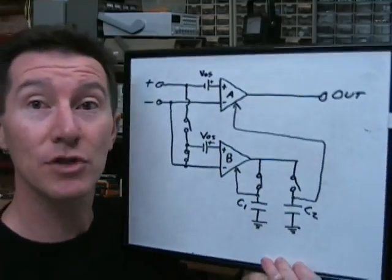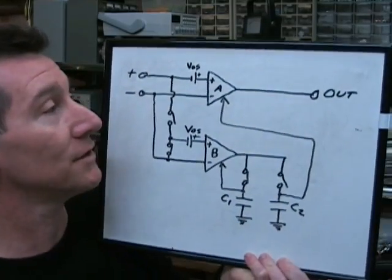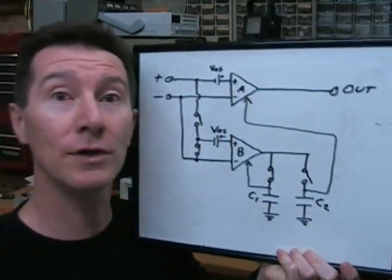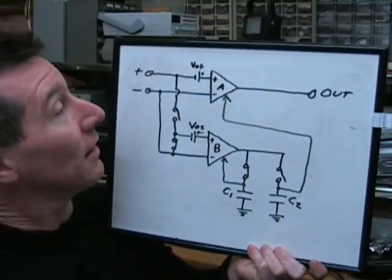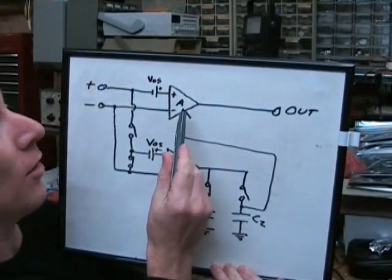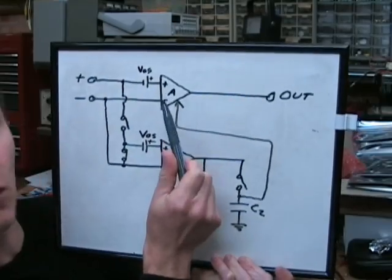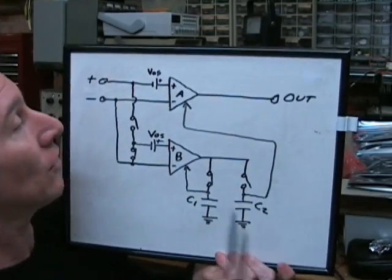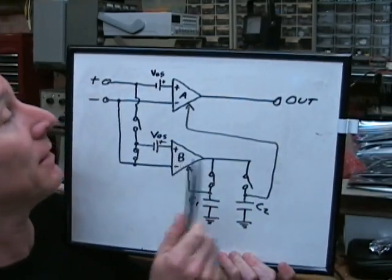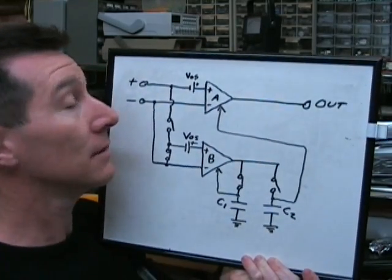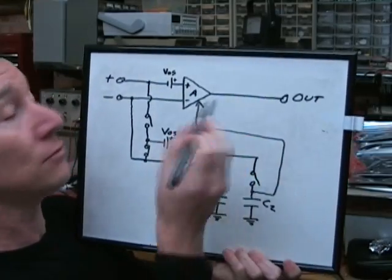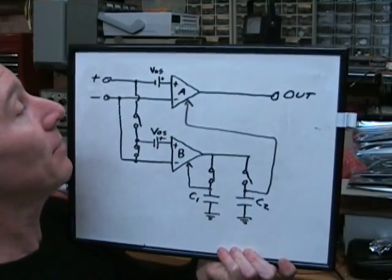And you have to resort to one of these chopper amplifiers or auto zero amplifiers. They're really cool parts, and I'll explain how they work. I've got the internal circuitry of a typical chopper or auto zero amplifier, and this is how it works. You've got your standard op amp here. We'll call it op amp A. It's got two op amps in it, op amp A and op amp B. Op amp A is the actual standard amplifier used as a standard op amp.